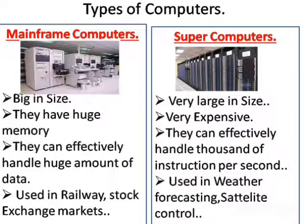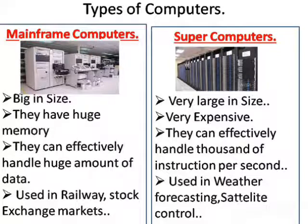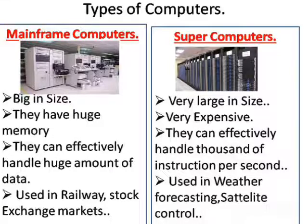The next is the mainframe computer. As you can see in this image, it is big in size and has huge memory. It is used in railways and stock exchange markets. The last type of computer is the super computer. It is very large in size and expensive — it cannot be kept at home. It is used in weather forecasting and satellite controls.